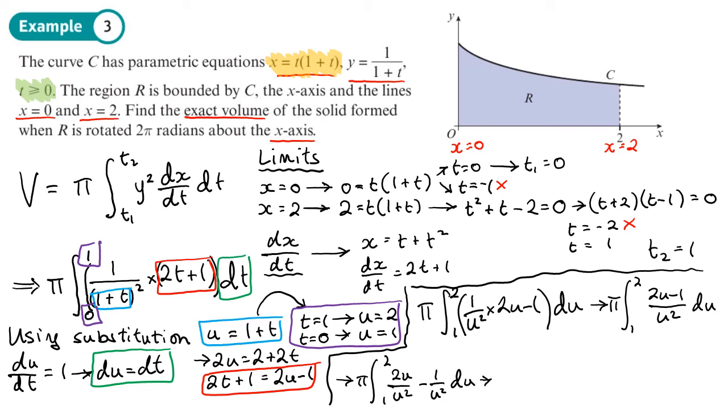Now, the first fraction here, that will simplify just to 2 over u. And then I've got 1 over u squared. So when I integrate this, 2 over u, I will try log u. Log u, and then I need to times it by 2. So the 2 over u becomes 2 log u. And then the minus 1 over u squared. Remember, that's the same as negative u to the minus 2. So we add 1 to the power, divide by the new power. So we'll end up with plus 1 over u or u to the minus 1.